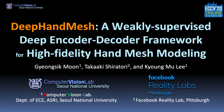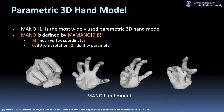Hello everyone. I'd like to present our deep-hand mesh. MANO is the most widely used parametric 3D hand model. It produces mesh vertex coordinates from 3D joint rotation and identity parameters.